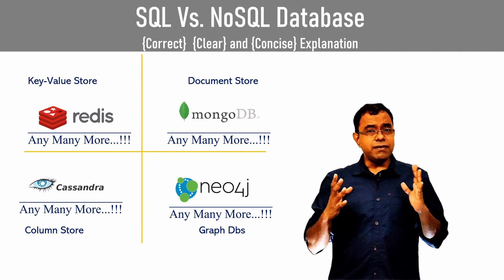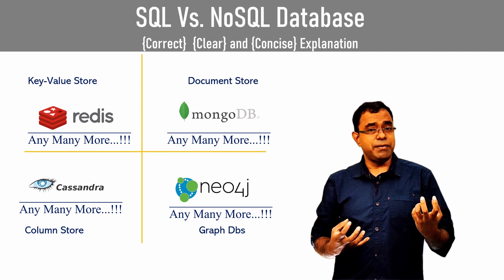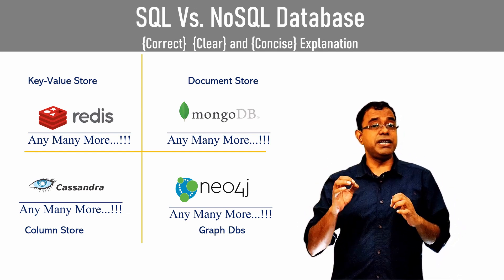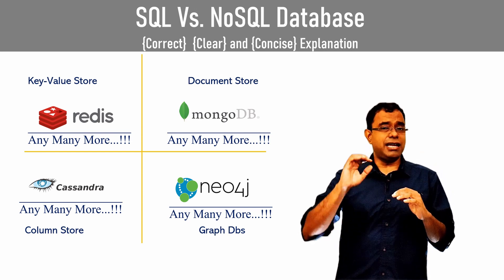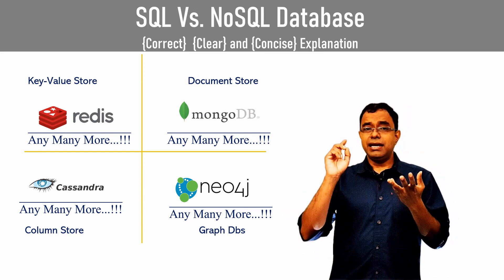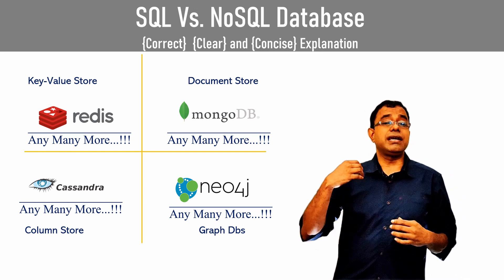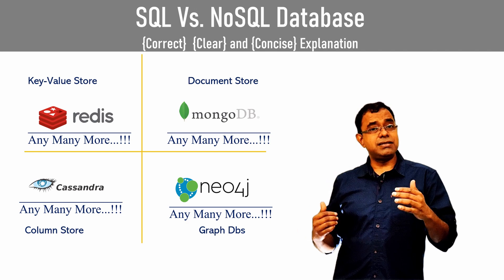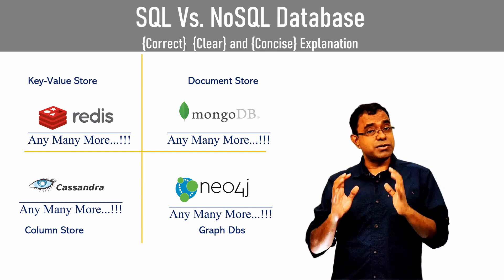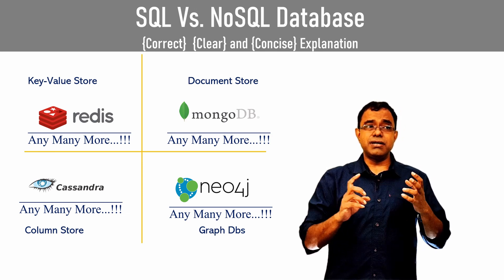In a key-value store, the data is stored considering the key as the primary entity. All the data structure is meant for having a key, and the value could be anything — it could be a string, JSON, or anything. In a document store, you create a collection which will contain any number of documents represented in terms of JSON most of the time.